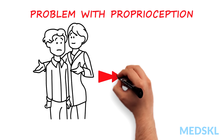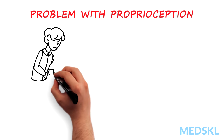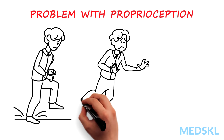When we think of sensory ataxia, we are referring to a problem with proprioception. Lesions affecting this pathway result in an inability to stand with your eyes closed — this is a Romberg sign. The patient may walk heavily as they cannot judge how to place their feet.